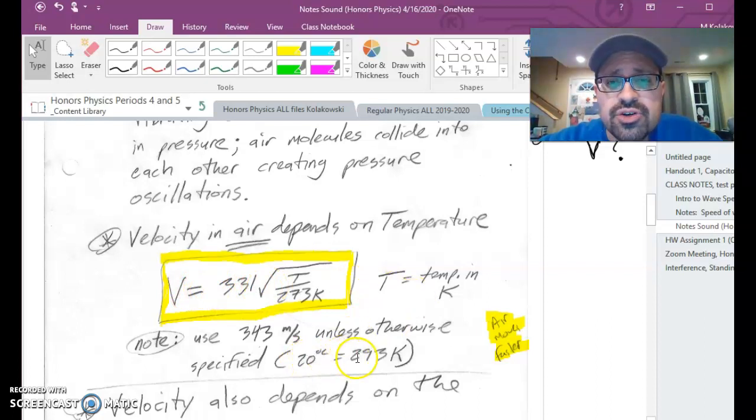However, if you plug in room temperature, which is 293 Kelvin, you take this number here, you add 273 to it. 293 divided by 273, take the square root of that, multiply by 331, you end up getting 343 meters per second. That is the speed of sound in room temperature air. It doesn't matter if it's a low pitch or a high pitch. You could have a tuba, you could have a flute. Both of those instruments in a concert hall, assuming that concert hall is at room temperature, those waves will pass from point A to point B across the room at 343 meters per second.